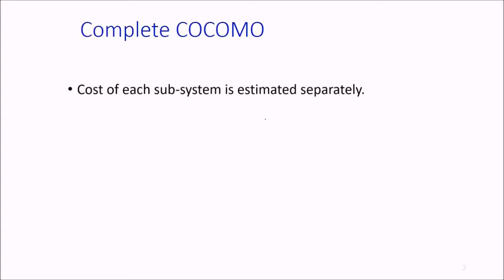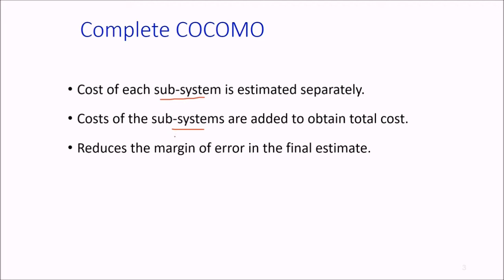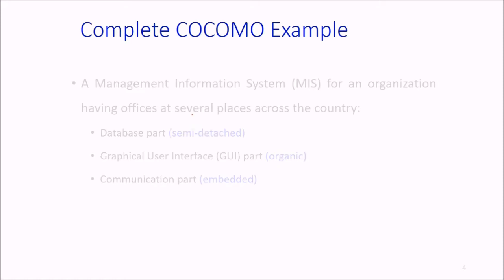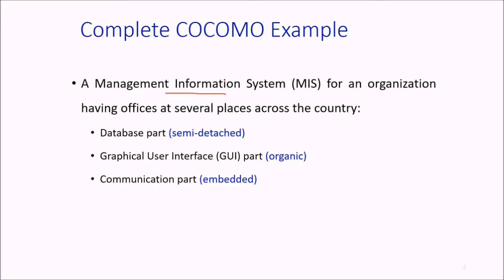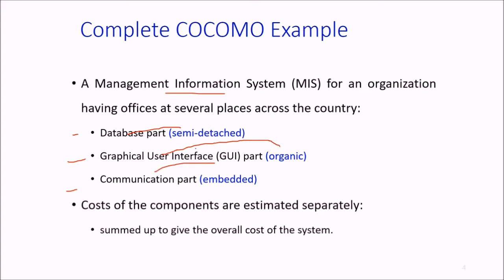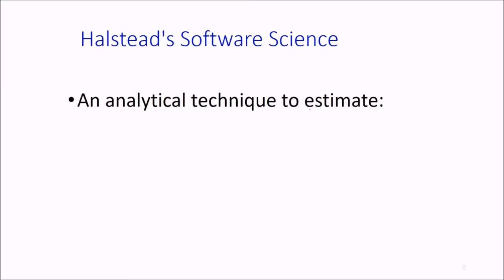So we have complete COCOMO. What it does is that it computes the cost of each subsystem separately or distinctly. The costs of subsystems are then added to obtain the total cost. This actually reduces the margin of error in the final estimation. For example, a management information system for an organization having offices at several places can have database part, graphical user interface part, and communication part. The database part would be semi-detached, GUI can be organic subsystem, and communication part can be embedded. Costs of components are separately computed and then summed up to find the final cost.